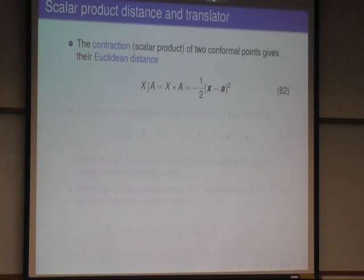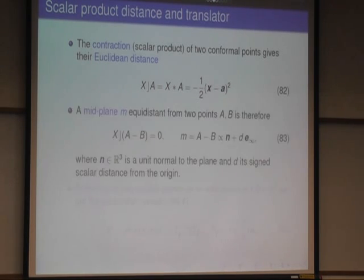And now if you compute with this representation for two points, the inner product of contraction, you get the square of the Euclidean distance. And that's very powerful.